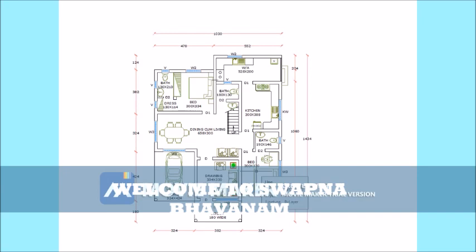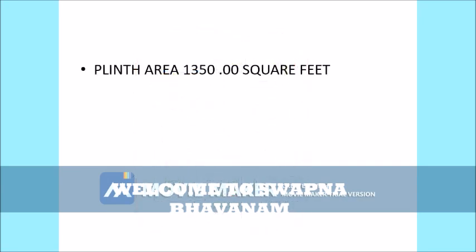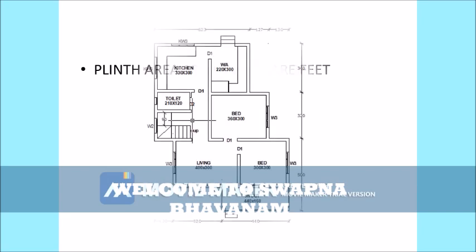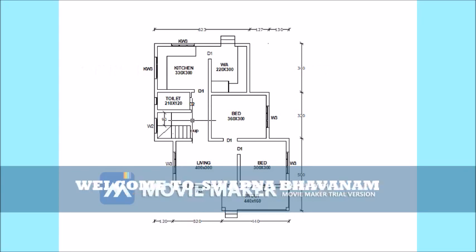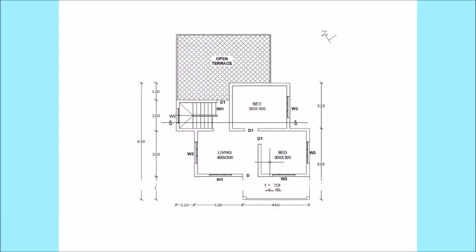This plan includes a sit-out, a dining hall, a kitchen, a work area, and car parking. This is a double-story plan with a sit-out, 2 bedrooms, a dining hall, a kitchen, and a work area. The first floor features a living area and a balcony. More details in the next video.